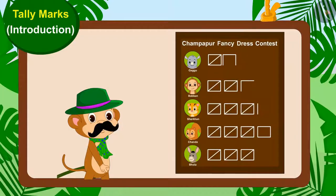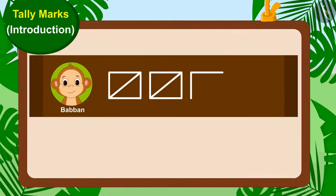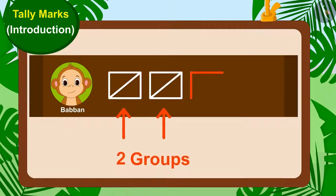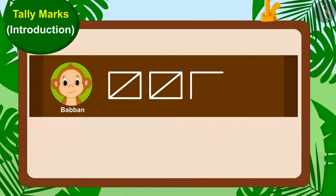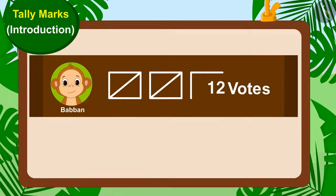Children, can you tell us how many votes Babban has got? Absolutely right. There are two groups of tally marks and two lines in front of Babban's name. This means Babban has got 12 votes.